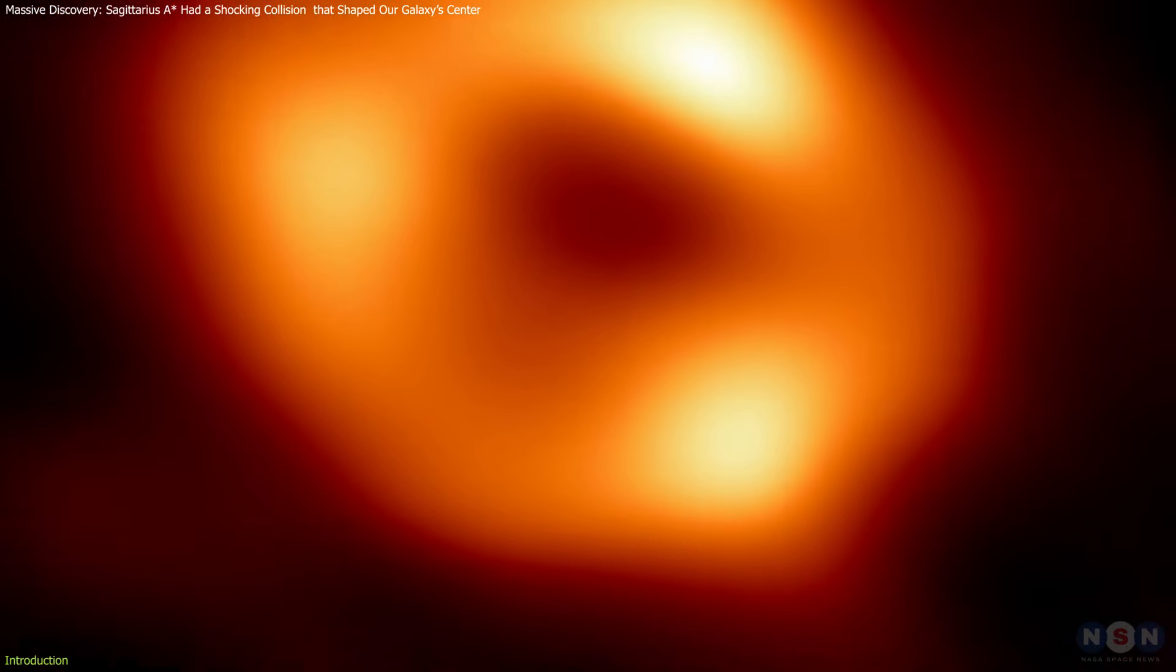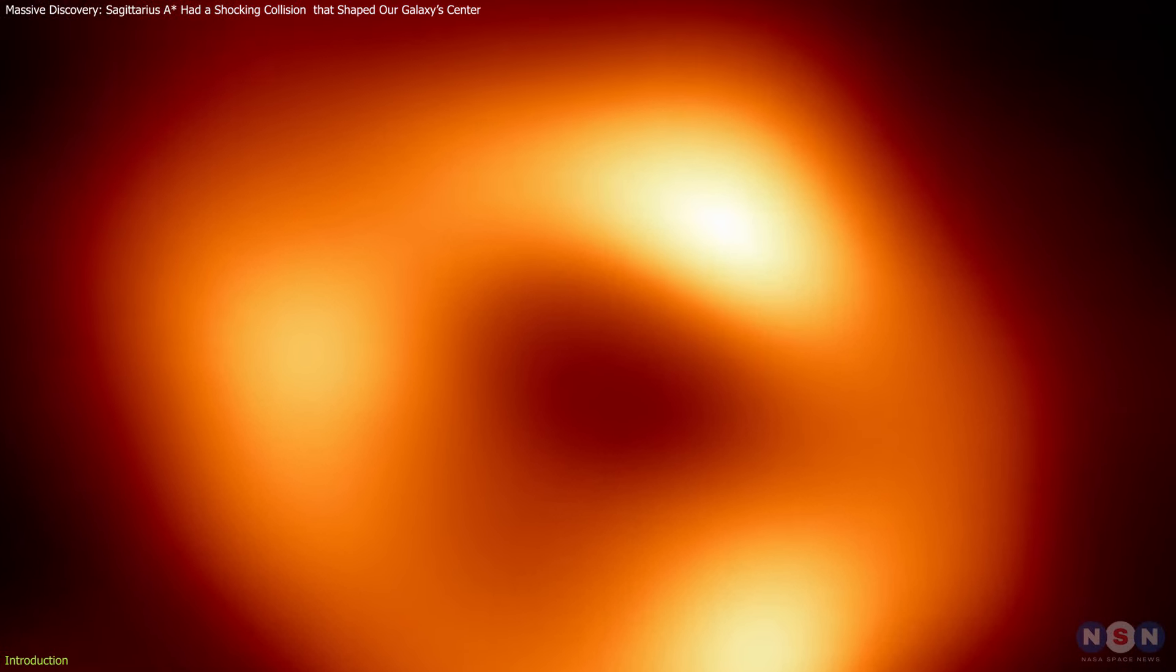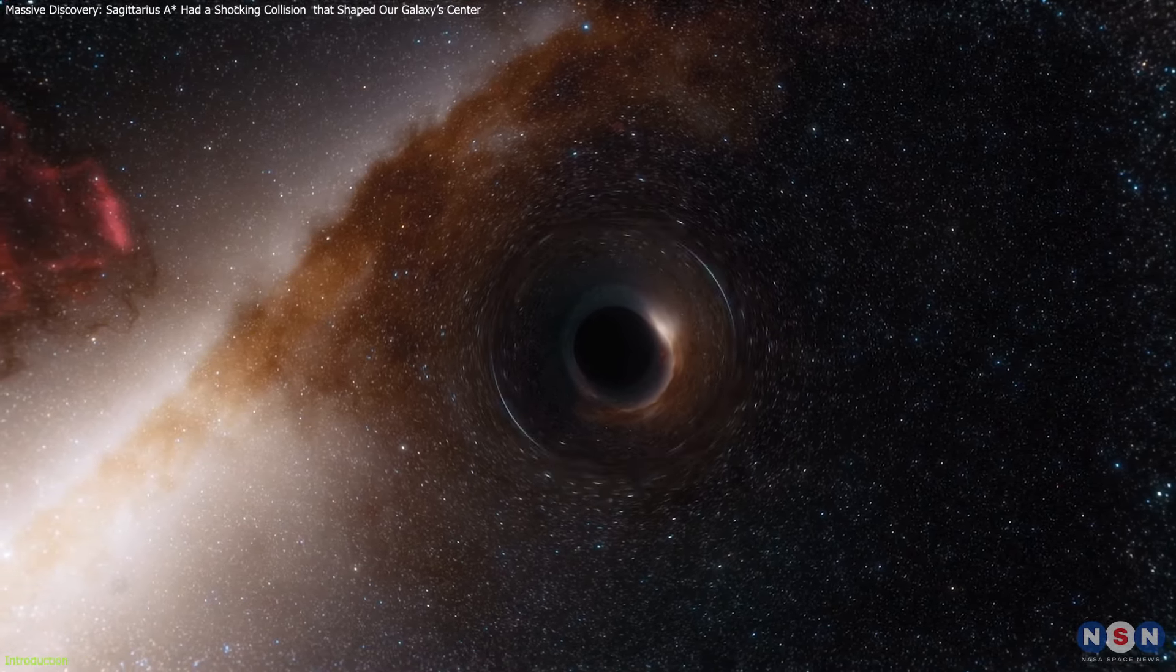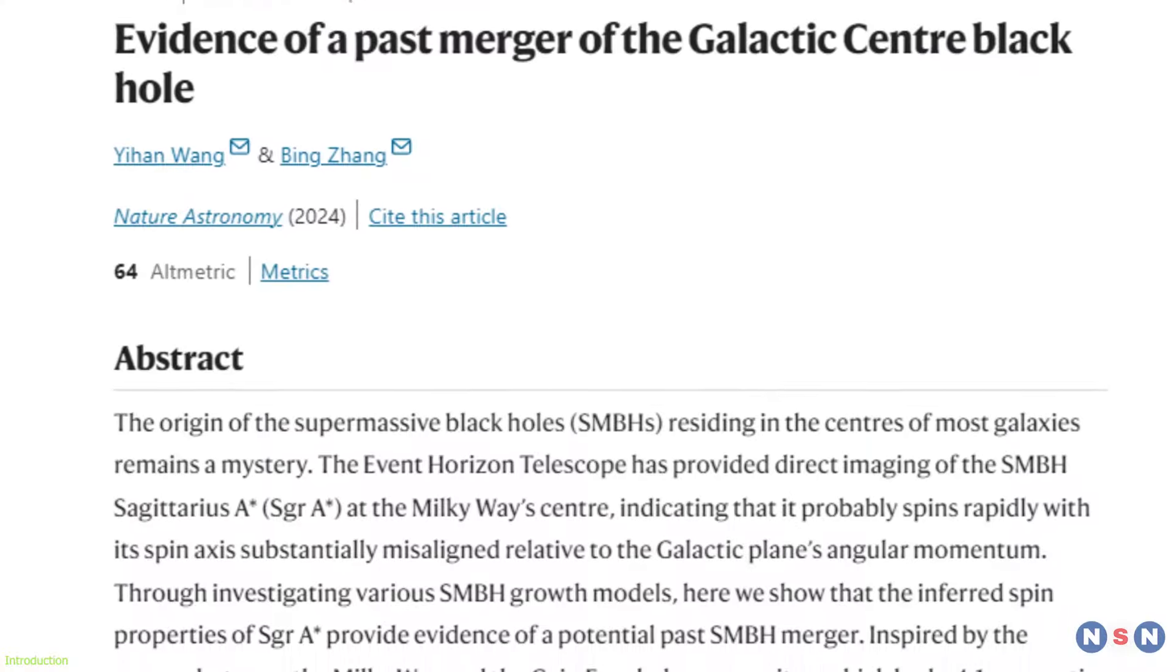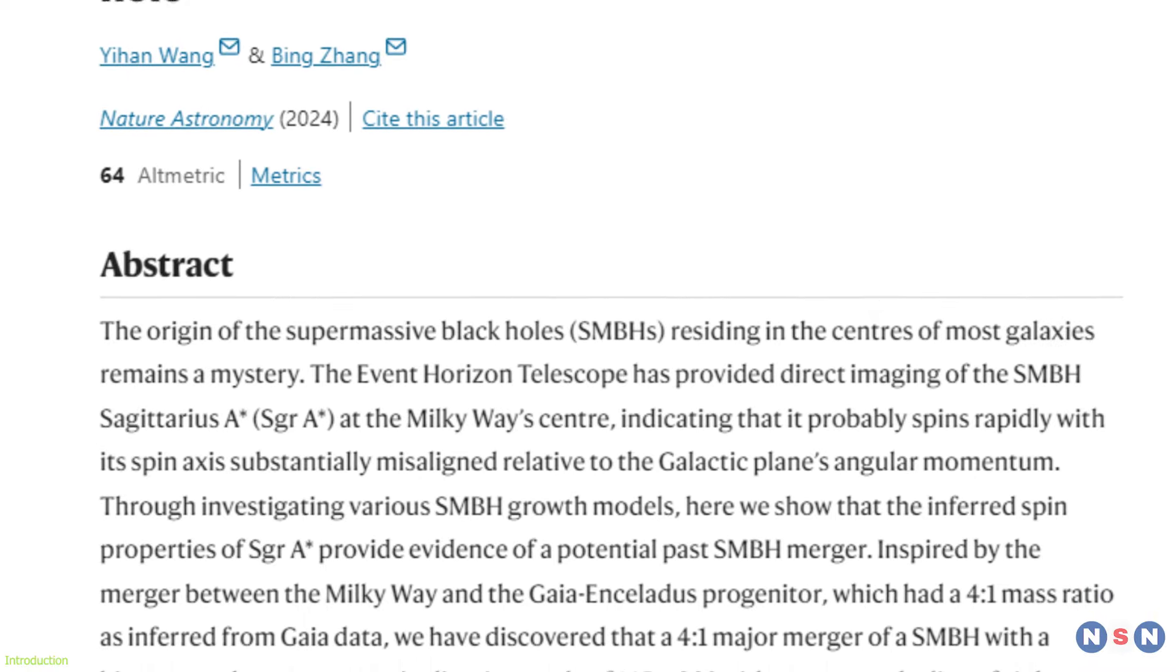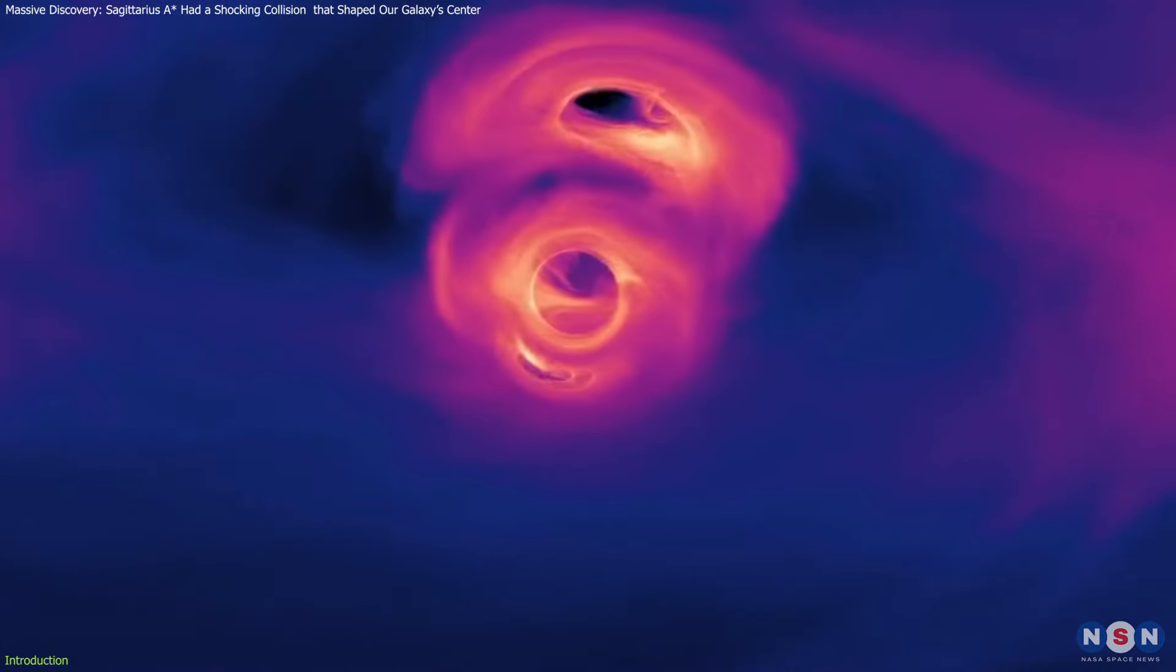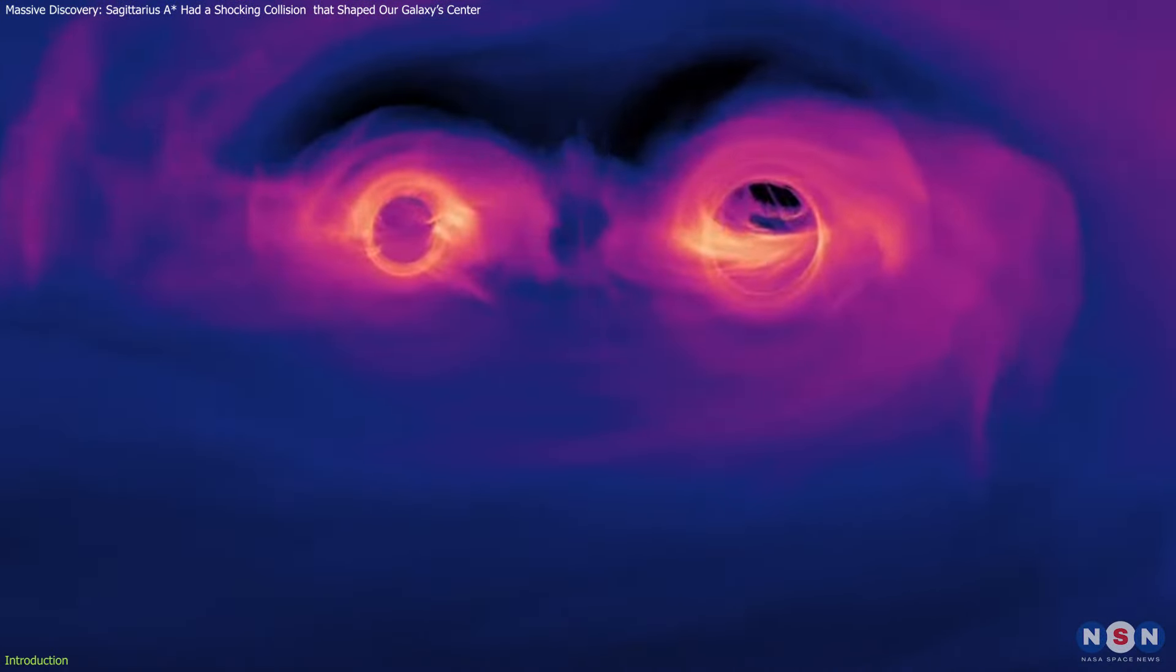Sagittarius A-Star, the supermassive black hole anchoring the center of the Milky Way, has been a focal point of astronomical mystery and intrigue. Recent groundbreaking research from the University of Nevada, Las Vegas, offers a thrilling new perspective. This cosmic giant may have formed through a colossal merger of two black holes.